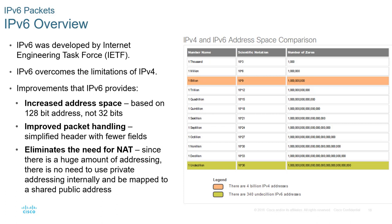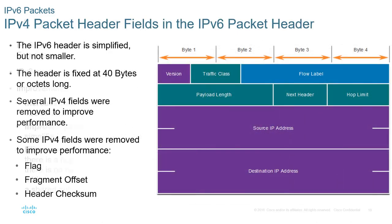IPv6 provides increased address space, eliminating the need for address translation. Most importantly, packet handling has been improved through a simplified header. Let's look at an IPv6 header — while it may be larger because of the address spaces, it's not as bloated. We have: version, priority, flow label, payload length (the entire length of the packet), next header (which is the higher layer protocol), hop limit (the TTL), and source and destination addresses.